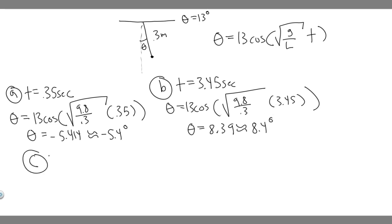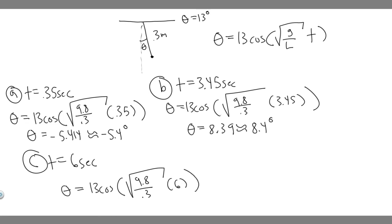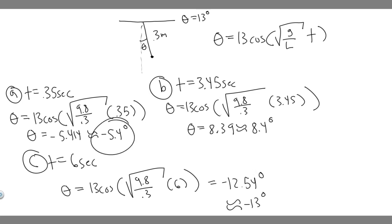The last one, part c, is at t equals 6 seconds. Theta equals 13 times the cosine of the square root of 9.8 divided by 0.3, multiplied by 6. When you do that, you get minus 12.54 degrees — you can round to minus 13 degrees. So to summarize: part a is minus 5.4 degrees, part b is 8.4 degrees, and part c is minus 13 degrees. Hopefully you found this useful.